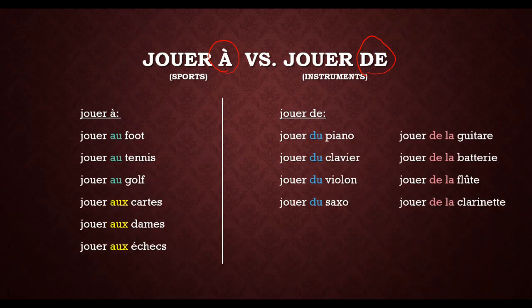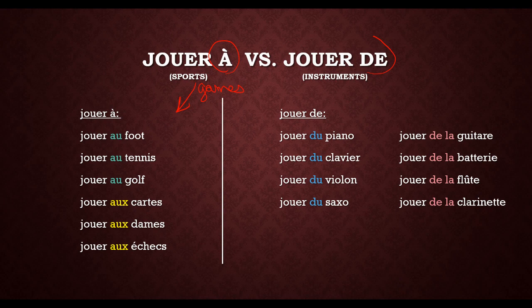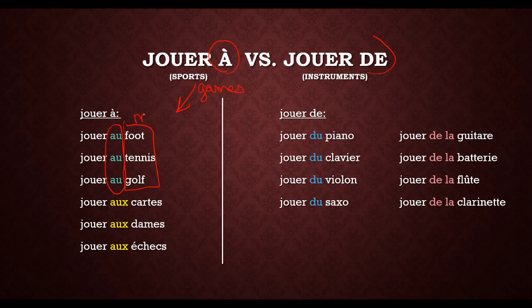First, sports and games. Jouer au foot — remember, that's soccer, not American football. For American football it's jouer au football américain. Also: jouer au tennis and jouer au golf. Notice we are using au on all of these — all these sports are masculine, which is why we use au. Jouer au foot, jouer au tennis, jouer au golf.